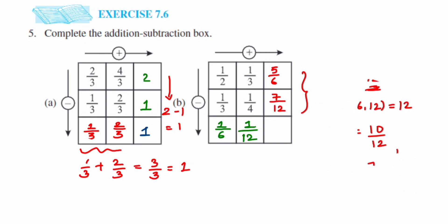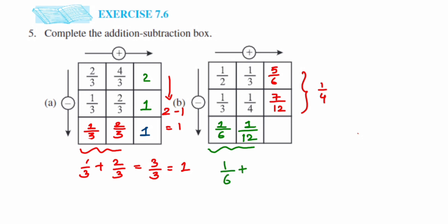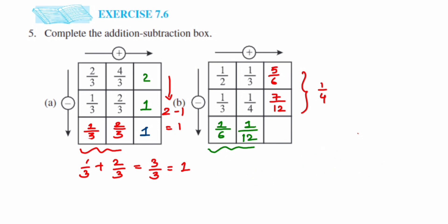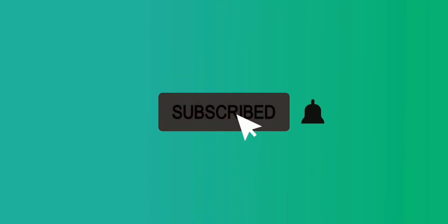We can also verify going across — that's addition. So 1/6 plus 1/12: LCM of 6 and 12 is 12. Multiply 1/6 by 2 to get 2/12, then 2/12 plus 1/12 equals 3/12, which cancels to 1/4. Whether we go horizontally or vertically, we get the same answer: 1/4. That completes the solution. I hope it's clear — drop a comment below if you have any questions.